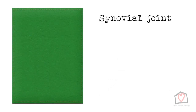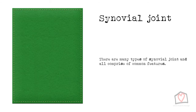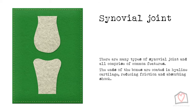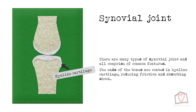There are many types of synovial joint, which we will look at in more detail. However, they all comprise common structural features. The ends of the bones at the site of articulation are coated in hyaline cartilage. This appears white and shiny when in good condition, acting to reduce friction and absorb shock during movement.